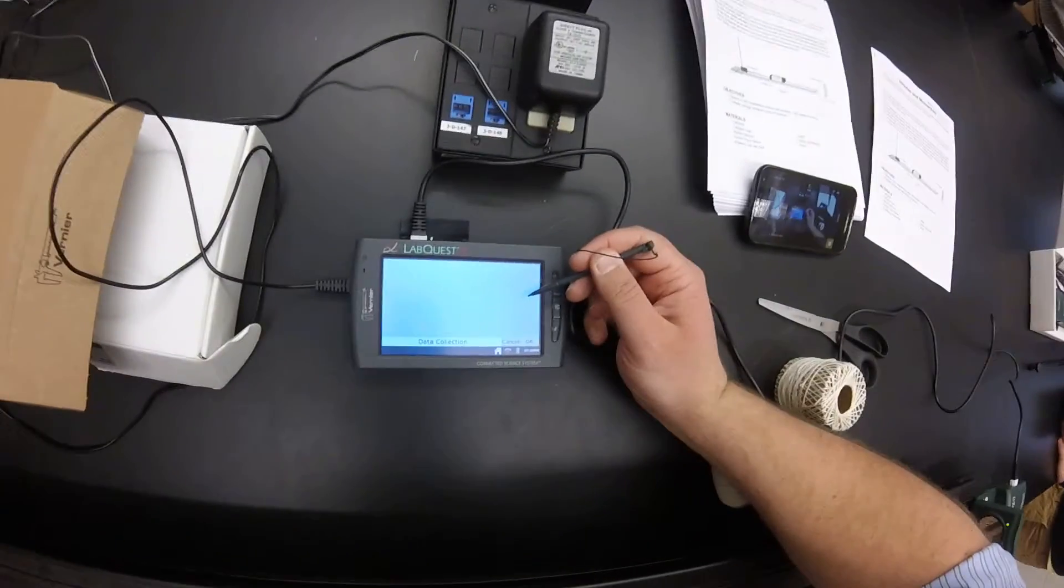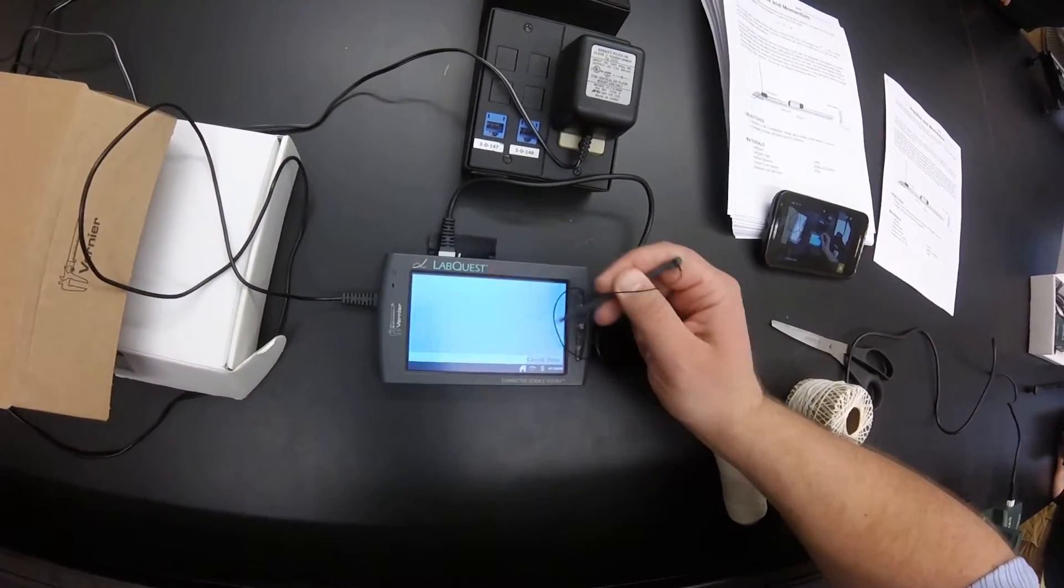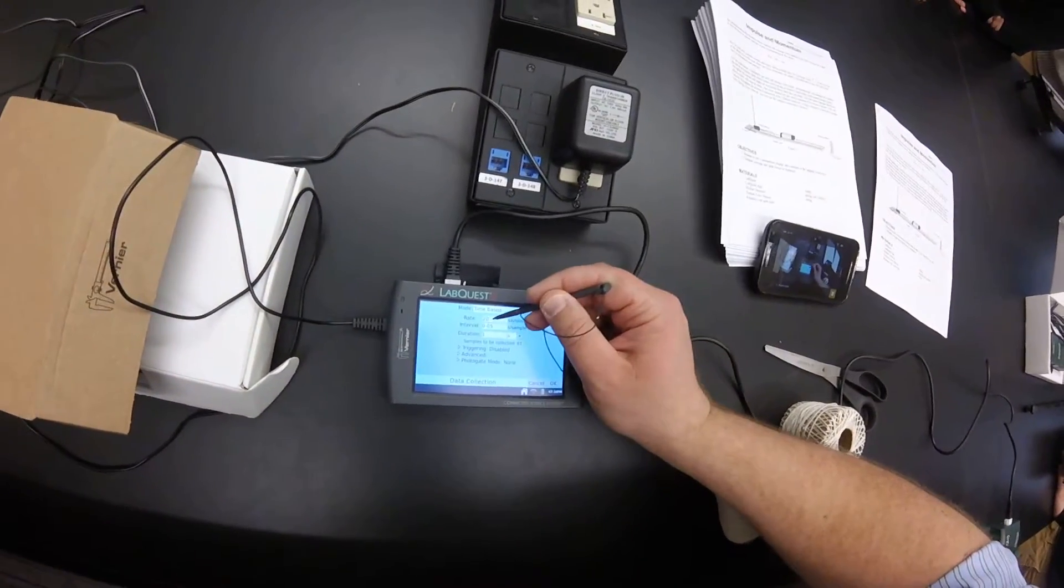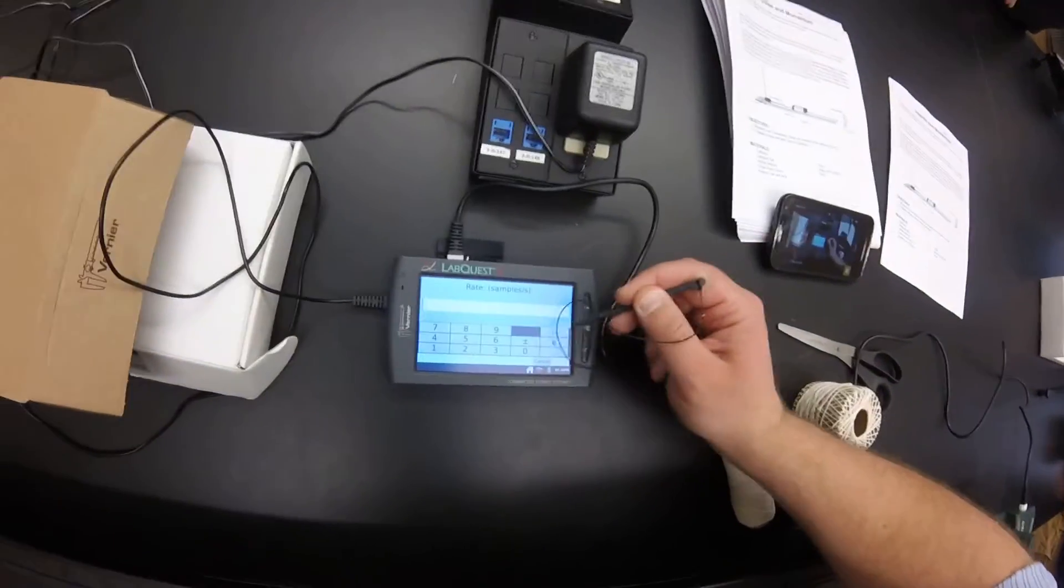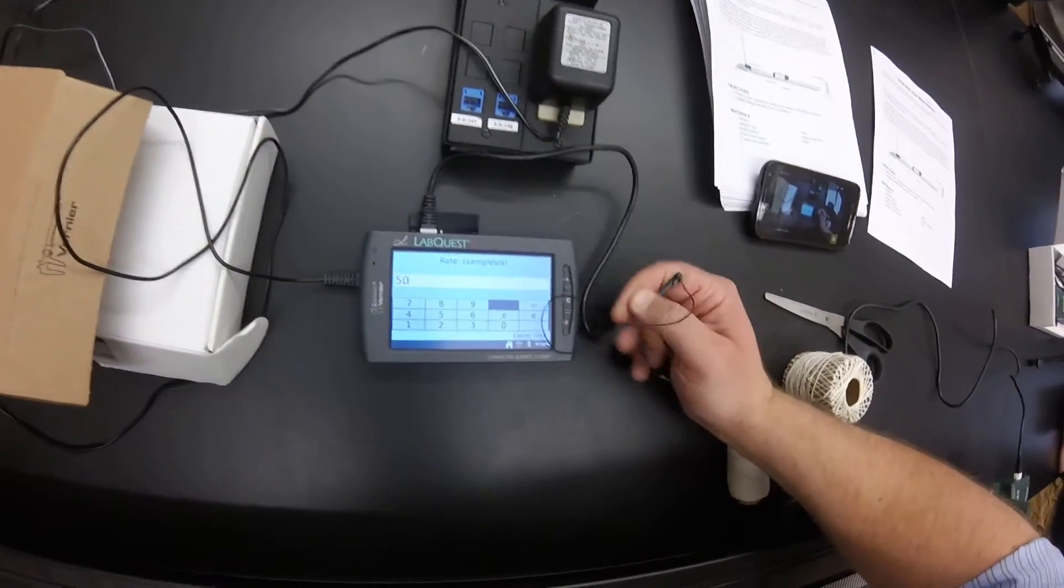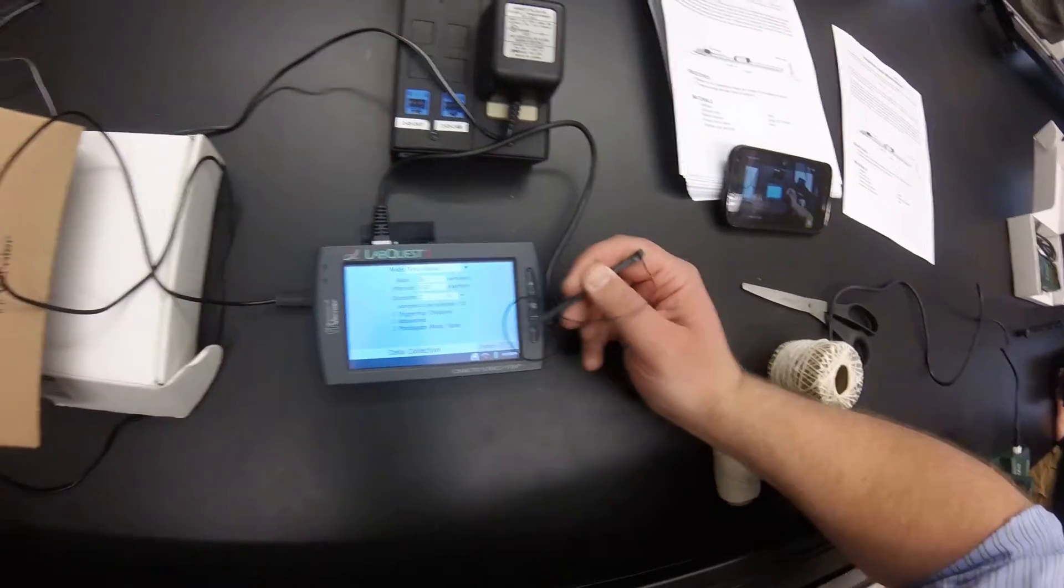And in the lab, it asks us to change the duration to three seconds. So you touch duration, change it to three seconds. And it asks for 50 samples a second. So I'll change my samples to 50. And we're ready.